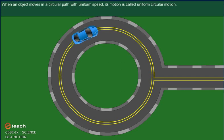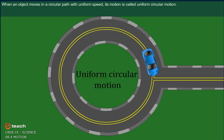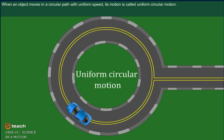When an object moves in a circular path with uniform speed, its motion is called uniform circular motion.